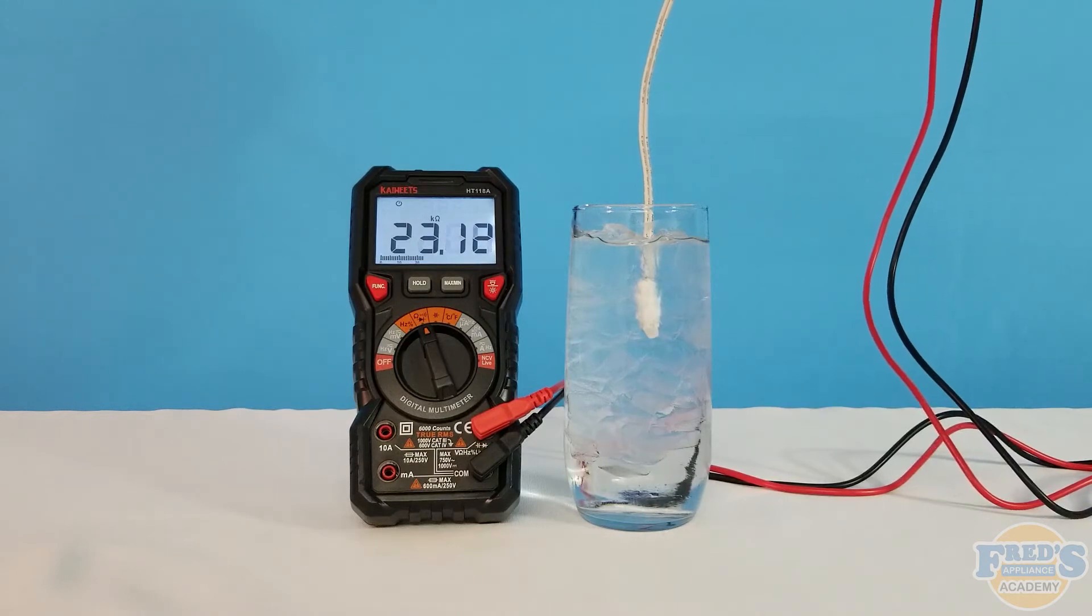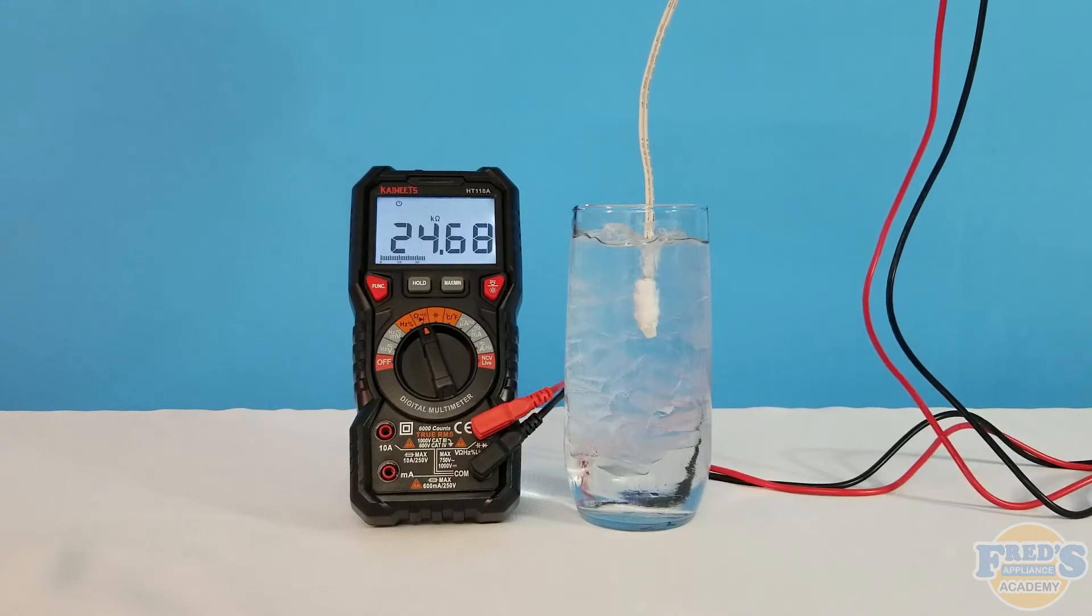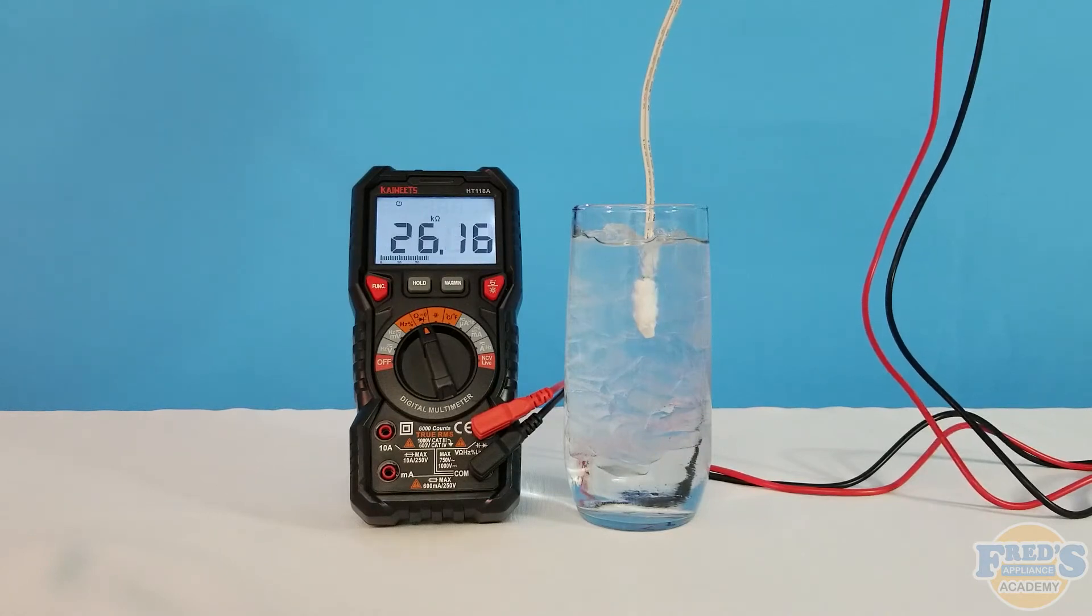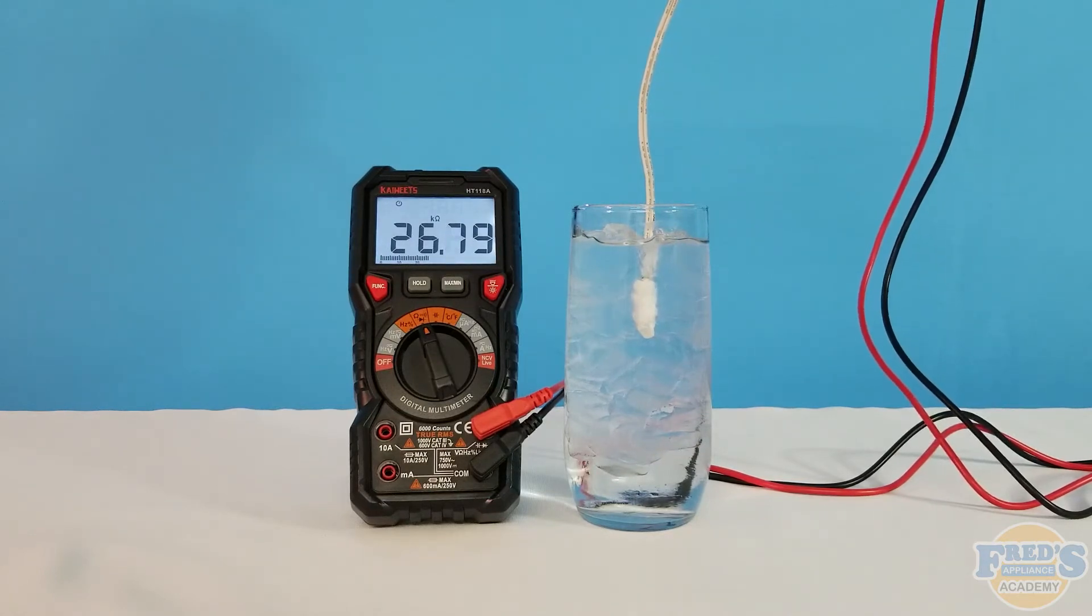I know that this particular thermistor should have a resistance value of about 32,000 ohms at 32 degrees and fortunately for us a glass of ice water is almost exactly 32 degrees. So let's do a little fast forwarding as our thermistor cools off.